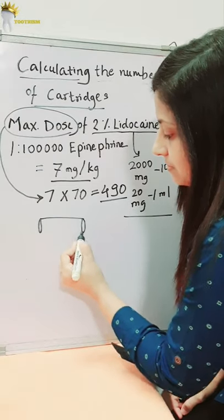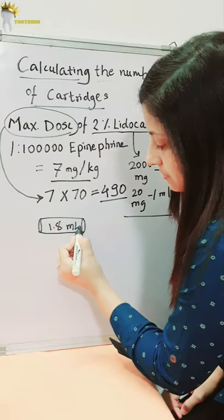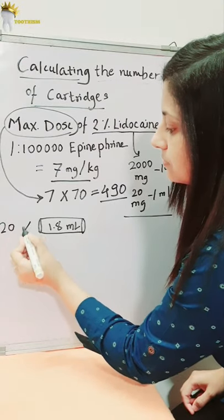A dental cartridge contains 1.8 ml of local anesthetic solution. So 20 into 1.8 equals 36 mg.